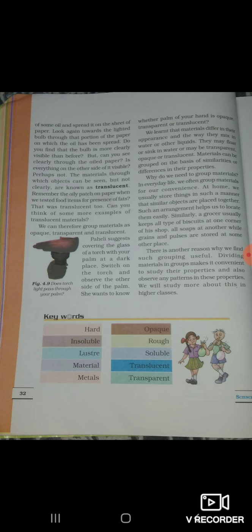Materials through which objects can be seen but not clearly are known as translucent. Objects and materials which we can see but are not clearly visible, we call translucent. Remember?